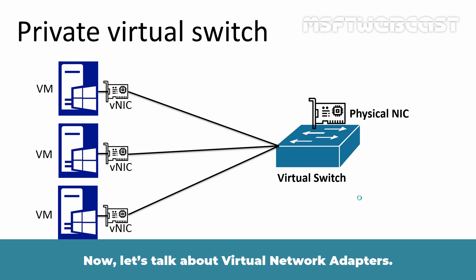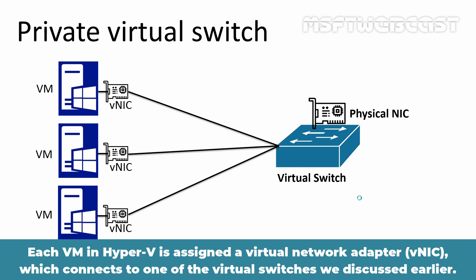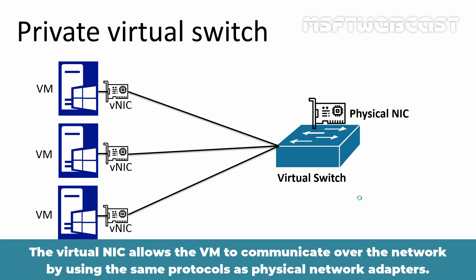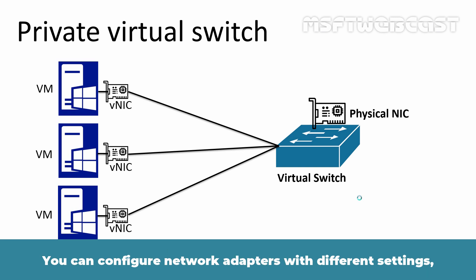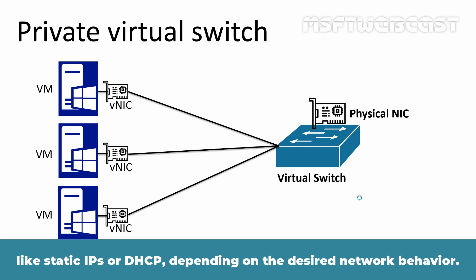Now let's talk about virtual network adapters. Each VM in Hyper-V is assigned a virtual network adapter which connects to one of the virtual switches we discussed earlier. The virtual NIC allows the VM to communicate over the network by using the same protocols as physical network adapters. You can configure network adapters with different settings like static IPs or DHCP, depending on the desired network behavior.